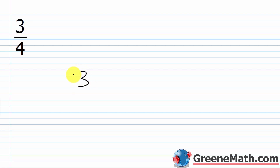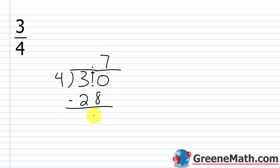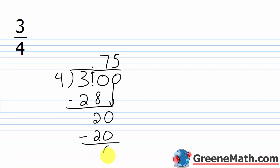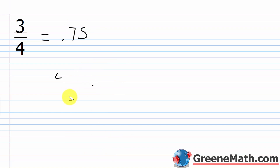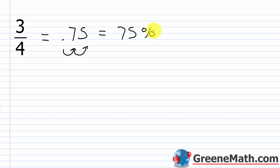What about 3 fourths? We can take 3 and divide it by 4. 4 is not going to go into 3, but it will go into 30 seven times. 7 times 4 is 28. Subtract and get 2. Bring down a 0. 4 goes into 20 exactly 5 times. 5 times 4 is 20. Subtract and get 0. So 3 fourths is 0.75. To turn this into a percentage, move the decimal point two places to the right — that gives me 75 — then add the percentage symbol. So 3 fourths is equal to 0.75, and it's equal to 75%.